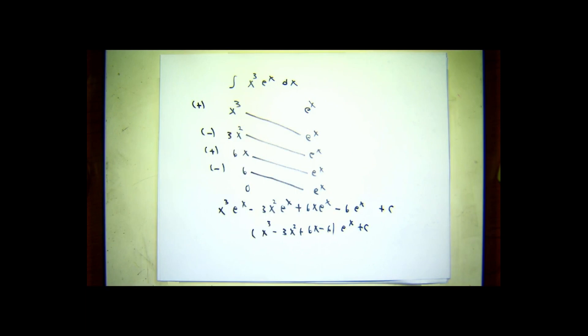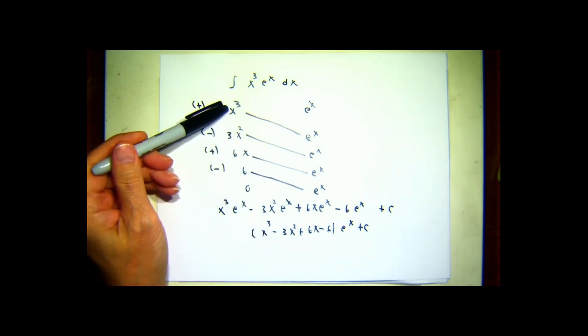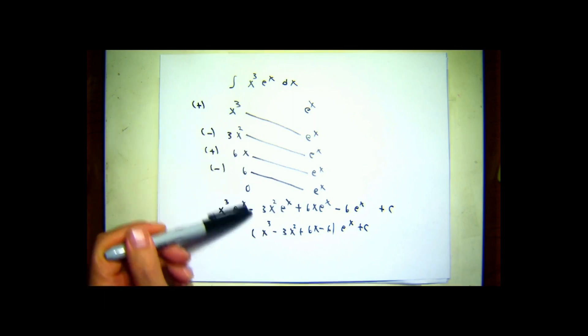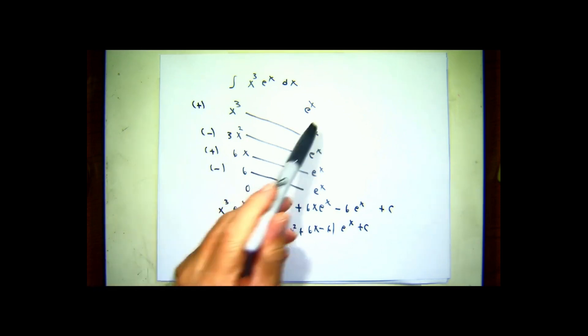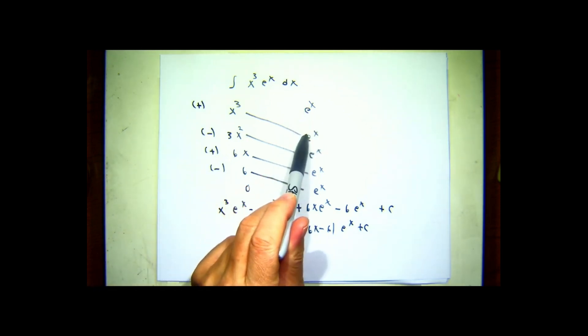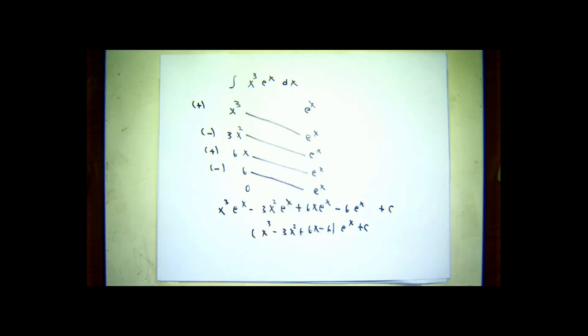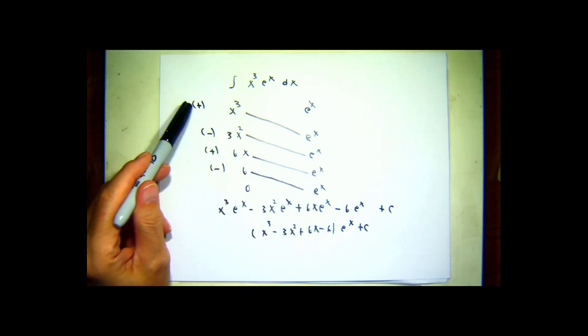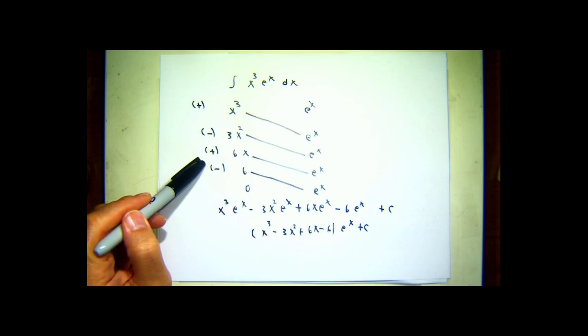As another simple example of this, let's look at the integral of x cubed e to the x. After a while, the derivatives of x cubed are all zero, and the integral of e to the x is just e to the x. So doing derivatives, I'll have x cubed to start with, 3x squared, 6x, 6, and 0 after that. Integrating e to the x gives me e to the x, and all successive integrals are e to the x. Connect with the downward sloping lines. Put the plus, minus, plus, minus pattern on it.